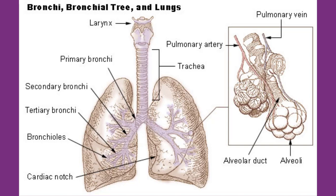Exchange of gases between the air in the lungs and the blood in the capillaries occurs across the walls of the alveolar ducts and alveoli. The two lungs, which contain all the components of the bronchial tree beyond the primary bronchi, occupy most of the space in the thoracic cavity. The lungs are soft and spongy because they are mostly air spaces surrounded by alveolar cells and elastic connective tissue. They are separated from each other by the mediastinum, which contains the heart, and the only point of attachment for each lung is the hilum or root on the medial side.